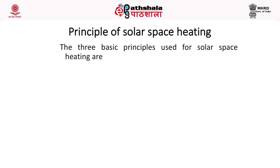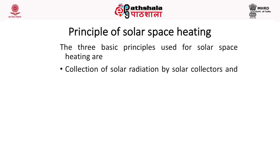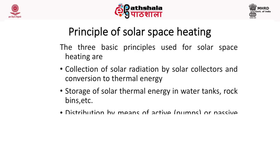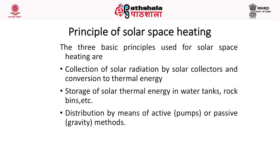The principle of solar space heating involves three basic steps: the collection of solar radiation by solar collectors and conversion to thermal energy; storage of solar thermal energy in water tanks or rock bins; and distribution by active means using pumps or passive means using gravity. So collection, storage, and distribution are the key elements of solar space heating.